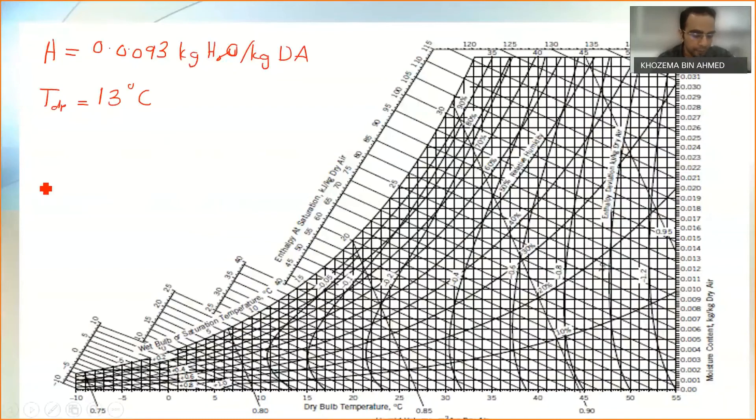Next, I want to find the value of my dew point temperature, which is going to be around 13 degrees Celsius. And finally, my humid volume V is going to be equal to around 0.871 meter cube per kg dry air.